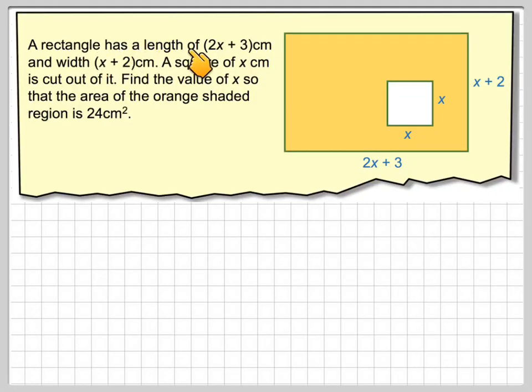A rectangle has a length of 2x plus 3 centimeters and a width of x plus 2 centimeters. A square of x centimeters is cut out of it. Find the value of x so that the area of the orange shaded region is 24 centimeters squared. So this area here will be 24 centimeters squared.